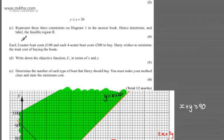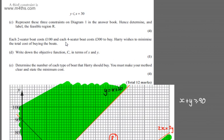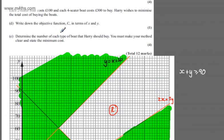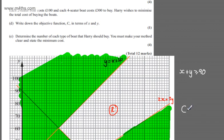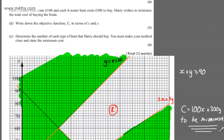Each two-seater boat costs £100 and each four-seater boat costs £300 to buy. Harry wishes to minimise the total cost. In part D for one mark, we write down the objective function C in terms of X and Y. The cost to be minimised is C = 100x + 300y. We want to minimise cost, maximise profit, or maximise area depending on context — here we minimise.